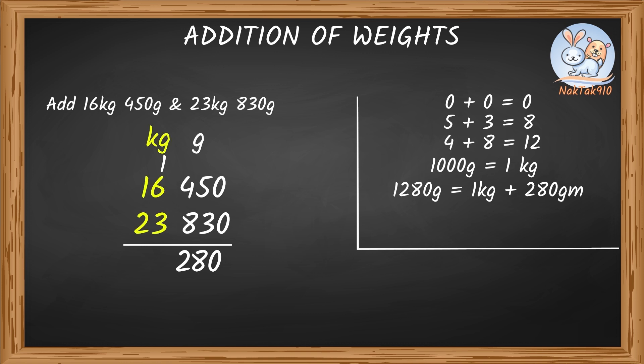Now, let's add the kg column. 1 plus 6 plus 3 equals 10. There is a carry. Group this carry to the next most column. Out of the next column, 1 plus 1 plus 2 equals 4.